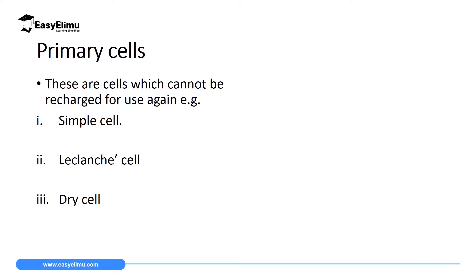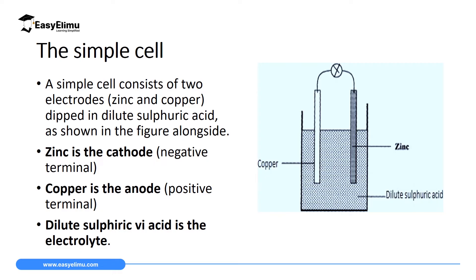When we talk about primary cells, we are talking about cells which cannot be recharged once they have been used. Once you use them you have to dispose of them — you cannot use them again. Examples are the batteries used in radios and watches. We have three examples of primary cells: the simple cell, which we discuss in this lesson; the Leclanché cell; and the dry cell, which we will discuss in the next lesson.